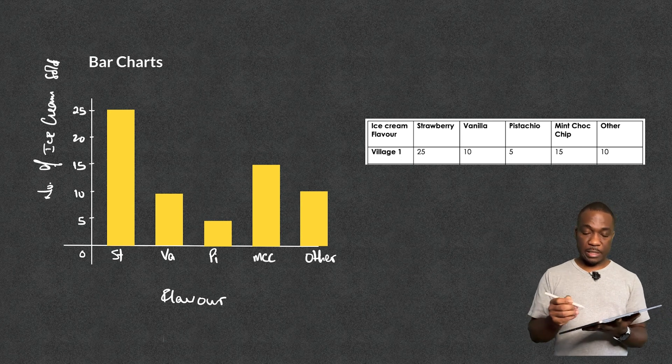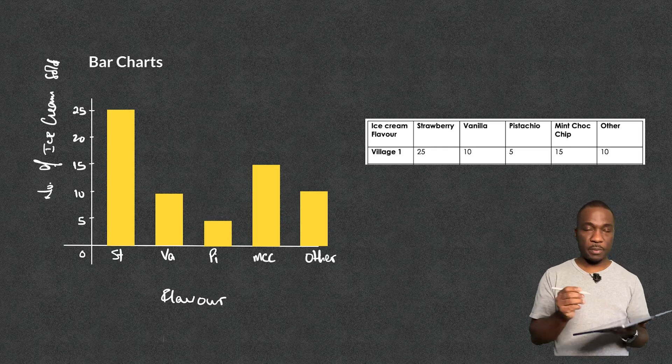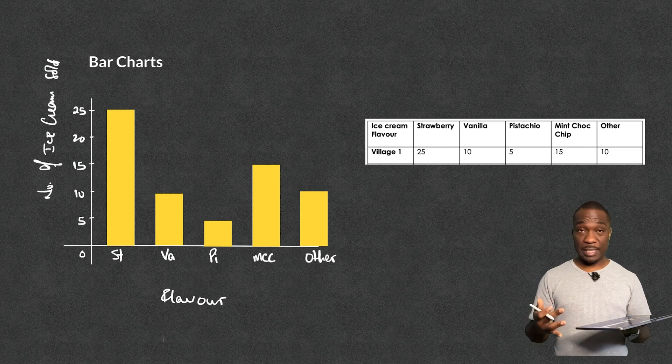The other thing about it is the width of each bar needs to be the same. So you shouldn't have varying widths. The widths need to be the same. And the space, the gaps between each of the bars need to also be the same. And that's basically it.